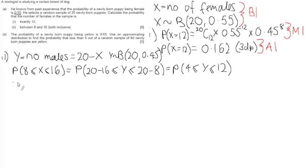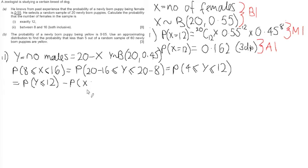To use the tables to calculate this, we find P(Y ≤ 12) and subtract P(Y ≤ 3) — one less than 4 — because we want to include 4 in the range. We go up to but do not include the value below 4, so that 4 is included in the probability range of success.